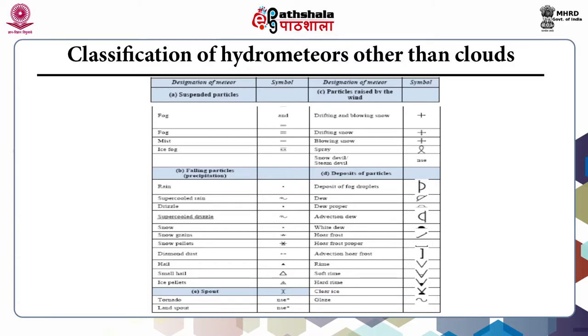In the spout category, you can see tornado and landspout. In the particles raised by the wind: drifting and blowing snow, drifting snow, blowing snow, spray, and snow devil or steam devil.